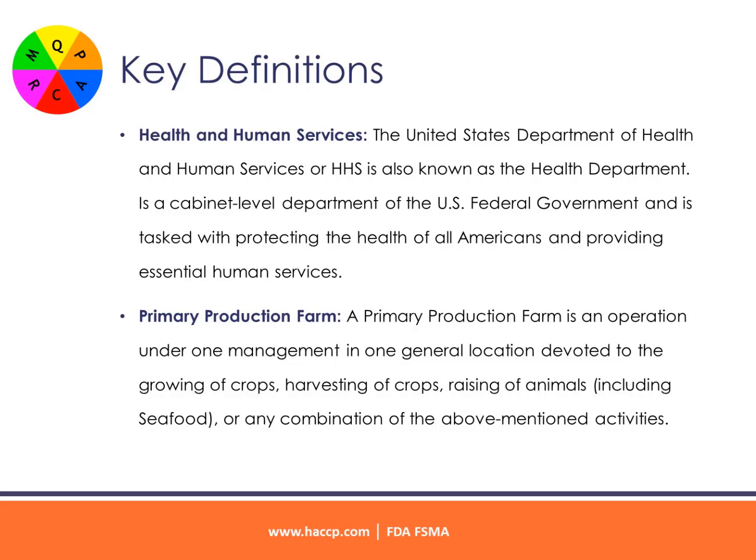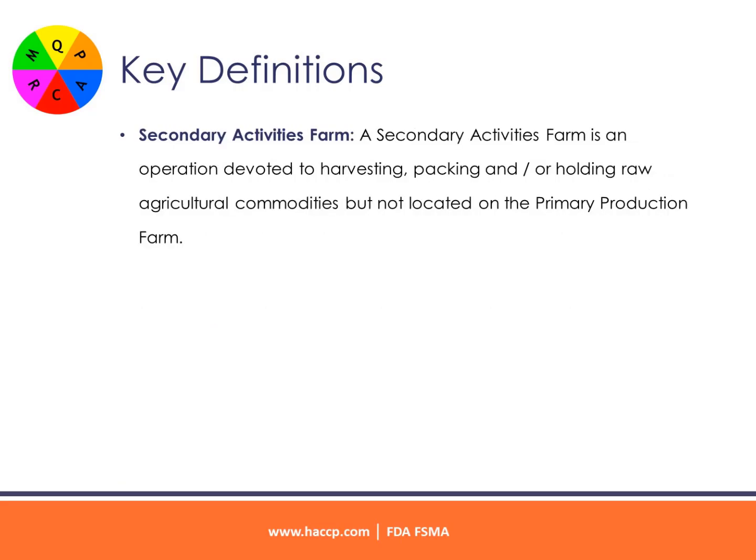HHS is tasked with protecting the health of all Americans and providing essential human services. Primary Production Farm — a primary production farm is an operation under one management in one general location devoted to the growing of crops, harvesting of crops, raising of animals including seafood, or any combination of the above. Secondary Activities Farm — a secondary activities farm is an operation devoted to harvesting, packing, and/or holding raw agricultural commodities but not located on the primary production farm.